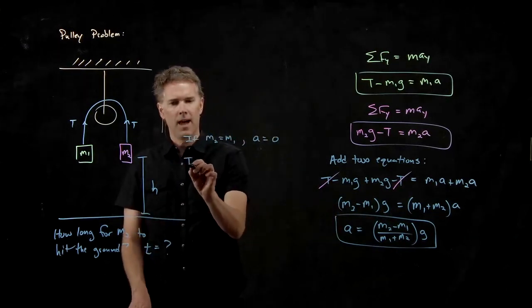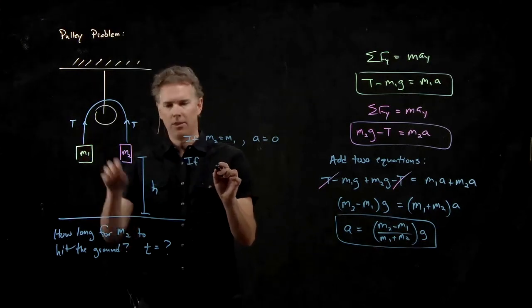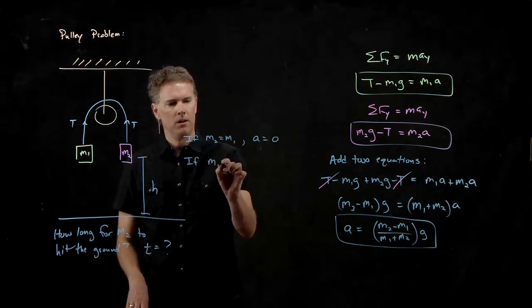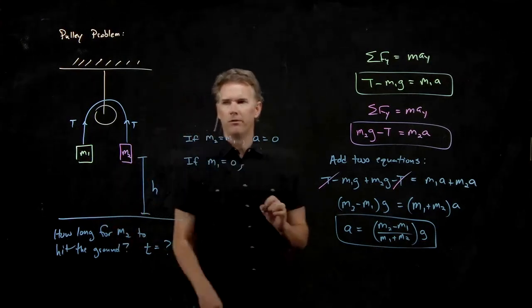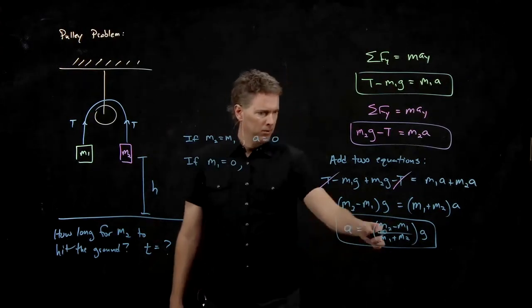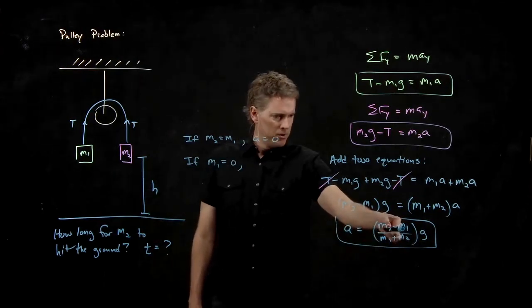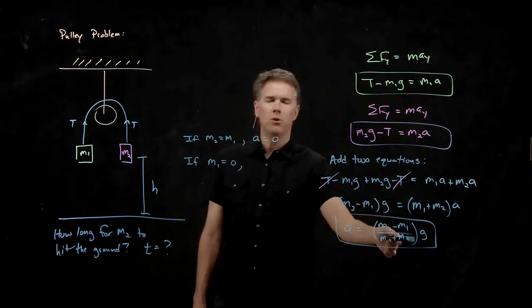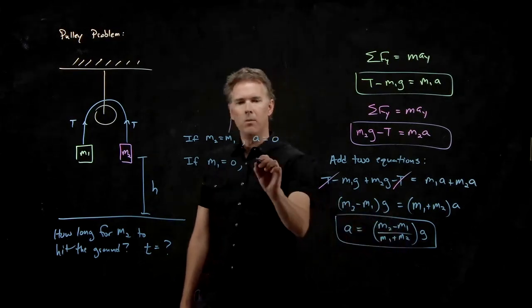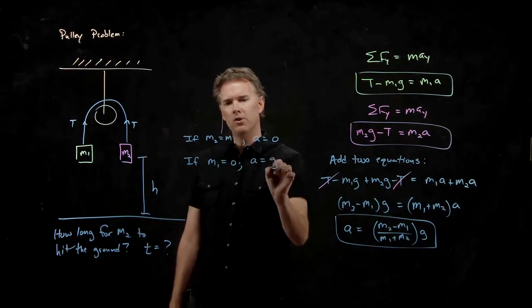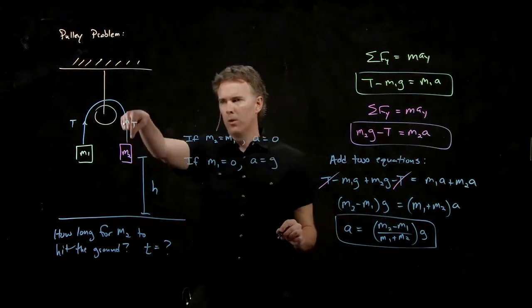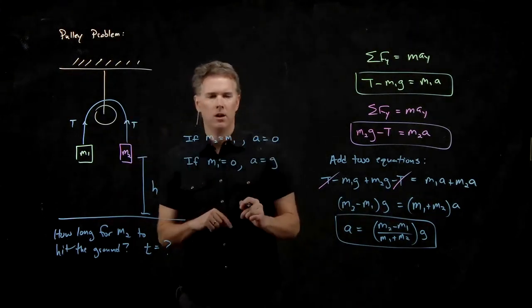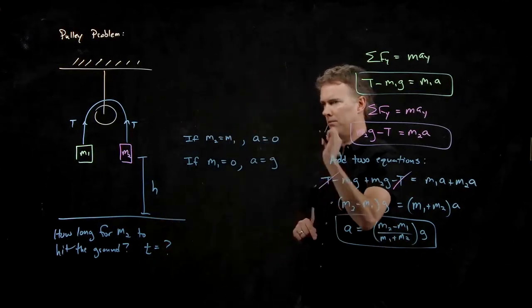We also said that if we don't hang anything on M1, then this thing should be in freefall. Is that what happens? We get zero up there and we get zero down there. And so we get M2 over M2, which is one. And we get acceleration is G. This thing will accelerate at G. So both of those limits make sense.